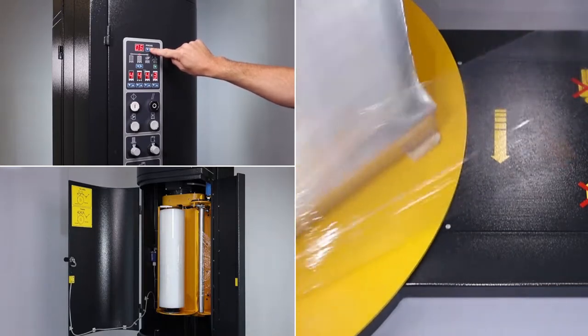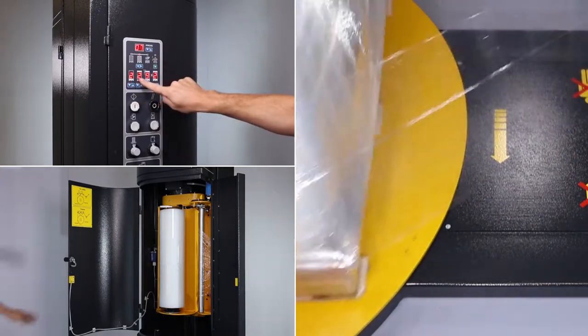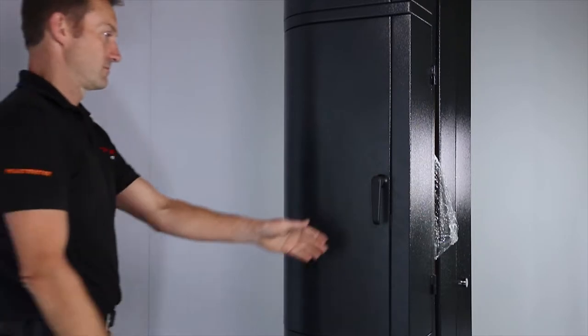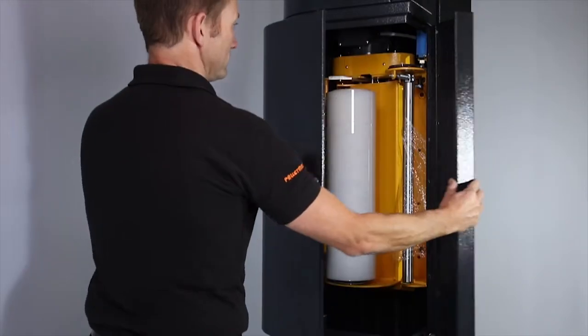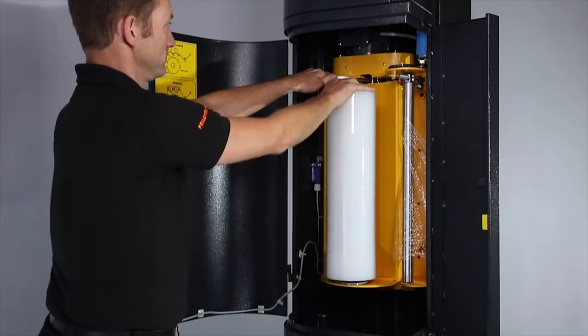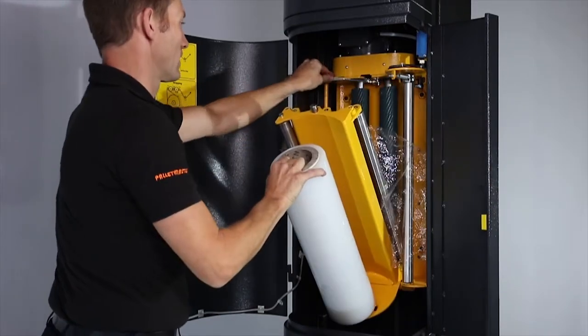Money-saving performance is produced via a variable speed power pre-stretch head. The head has great film yield and high load retention for cost-effective wrapping and a stable load for transit.